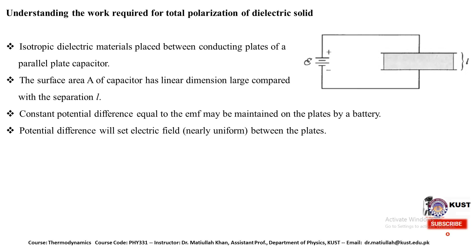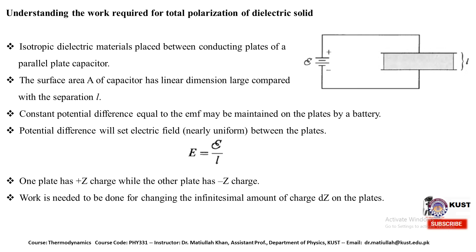We apply a constant potential difference equal to the EMF to maintain on the plates of the capacitor with the help of a battery. This potential difference will set up a uniform electric field between the plates. The magnitude of that uniform electric field is given by capital E equal to EMF divided by L, where L is the separation between the plates. As a result of this external potential difference, one plate has positive charge while the other plate has negative charge.